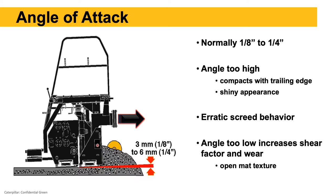Normally an eighth to a quarter inch angle of attack — that nose-up attitude. If we get too high an angle of attack while paving, the screed will compact with the trailing edge only — very little of the screed plate rides on the mix. You'll see a shiny looking mat, the rear of the screed plates wear out faster, and we'll have erratic screed behavior because of the small contact area between the screed plate and the mix.